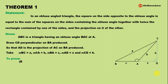To prove: BC² = AC² + AB² + 2 × AB × AD. In terms of the assigned variables, this becomes: a² = b² + c² + 2cx. This is the relation we need to prove.